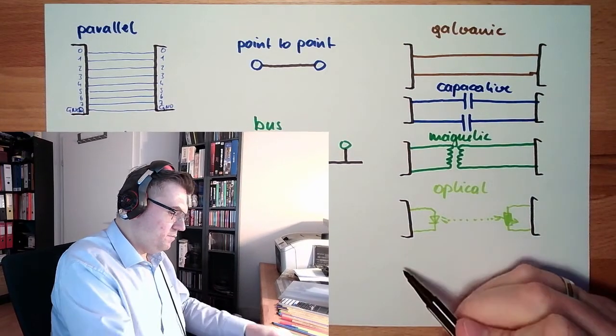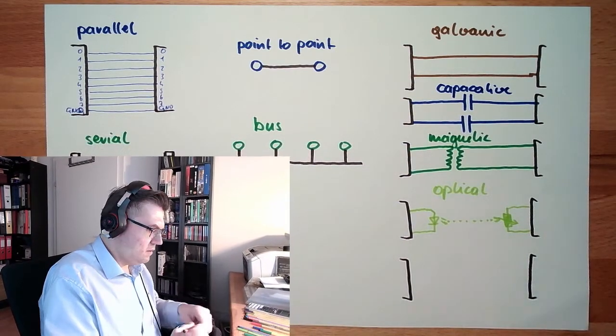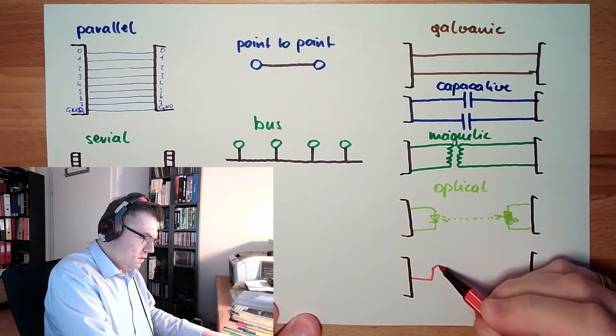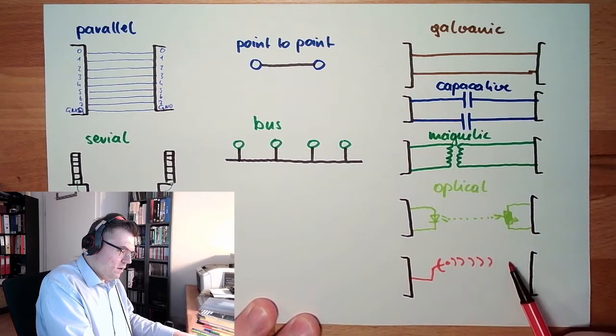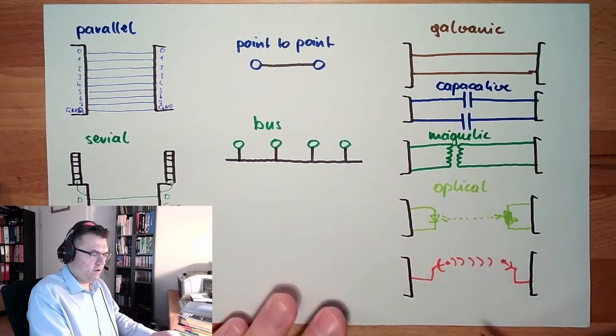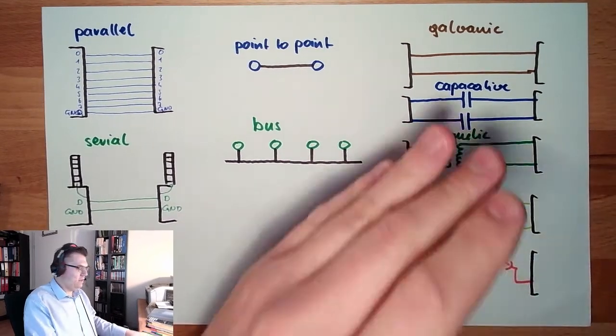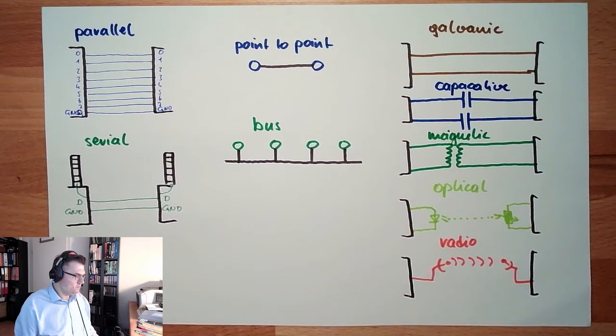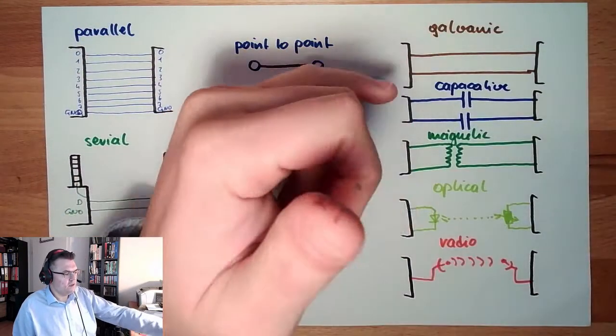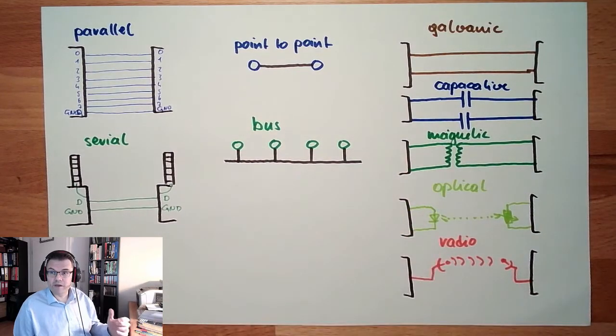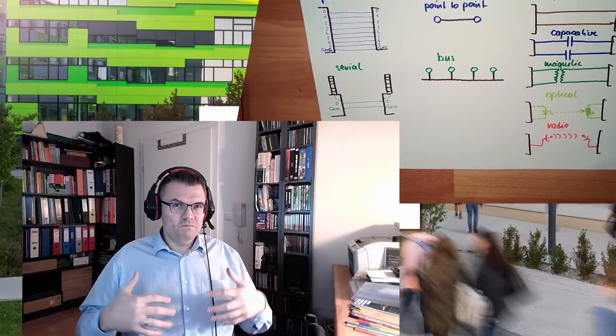These are coupling methods. And of course, last but not least, I could always do it like this. Go out, here is some Wi-Fi transponder or whatever. And then, I just transfer it over here. Radio coupling. These are the possibilities of coupling two things. So we have parallel transmitting, serial transmitting, point-to-point communication, bus communication, and galvanic coupling, capacitive coupling, magnetic coupling, optical coupling, and radio coupling. This would be the possibilities on how two systems might talk to each other.